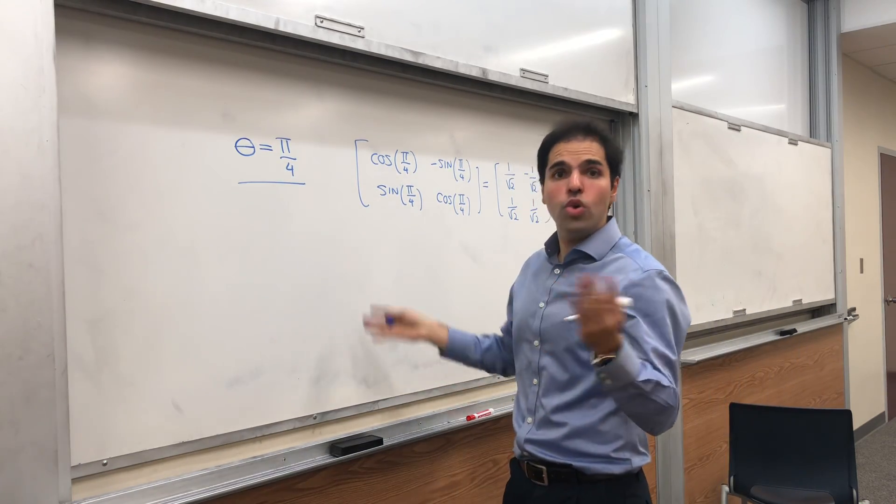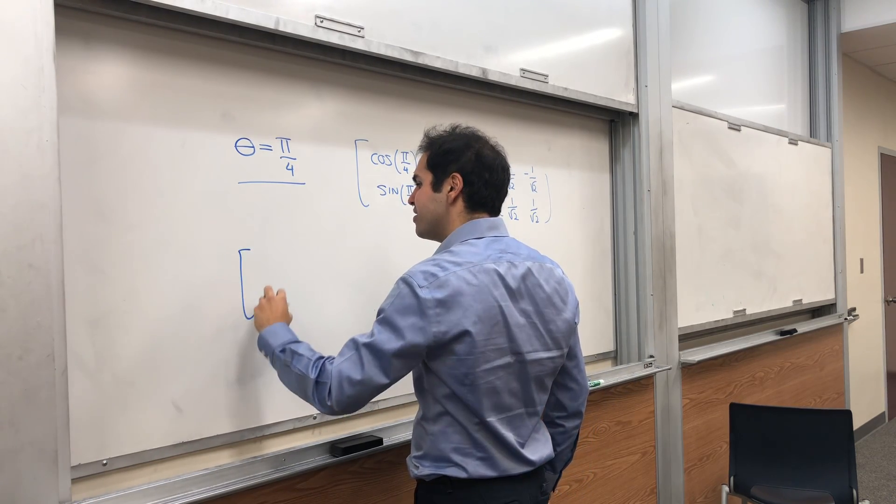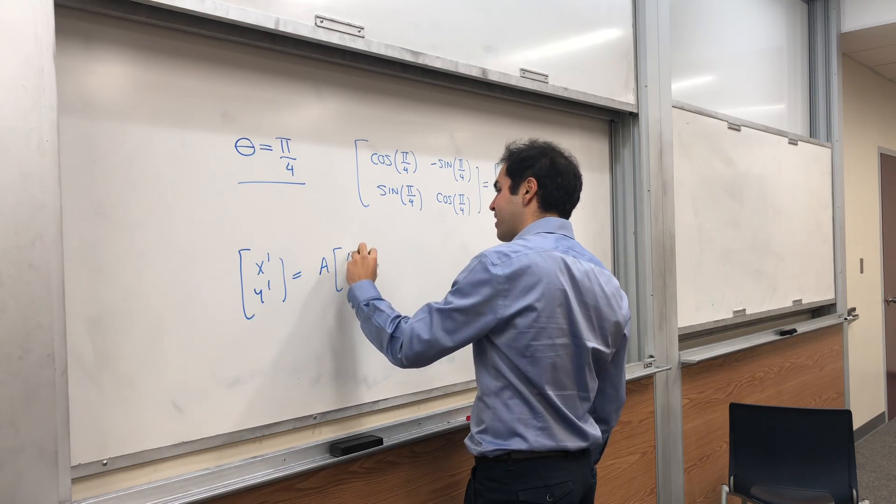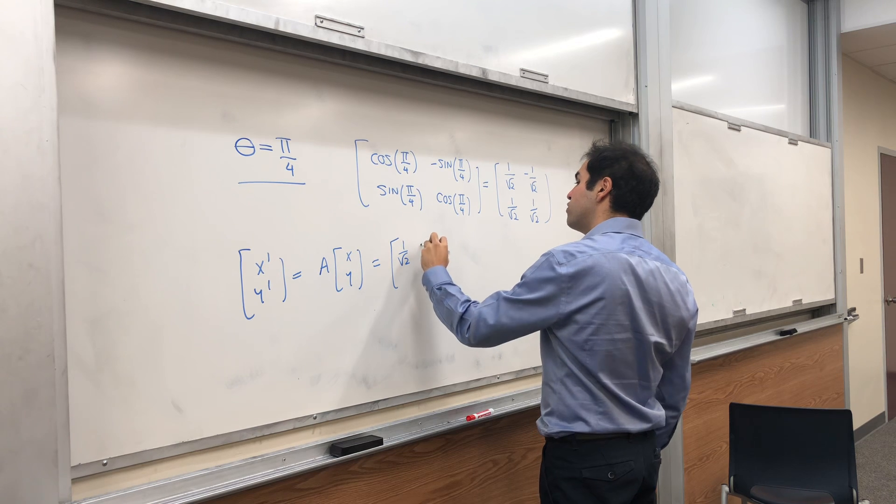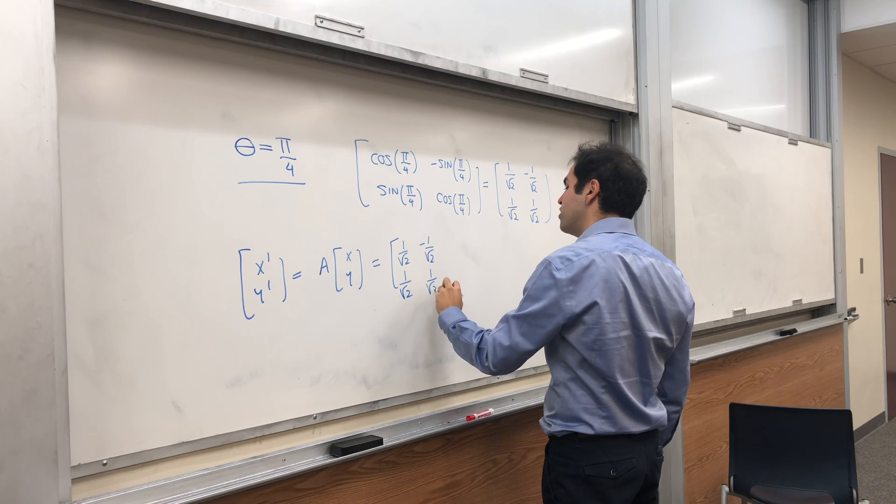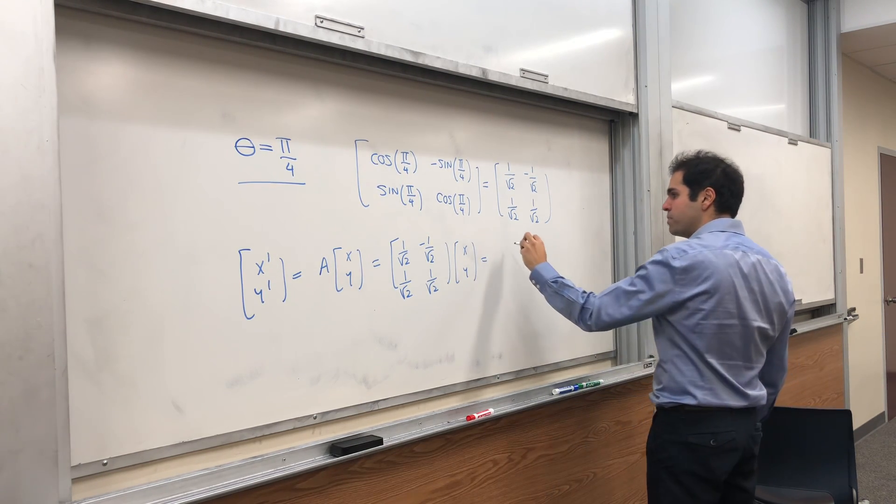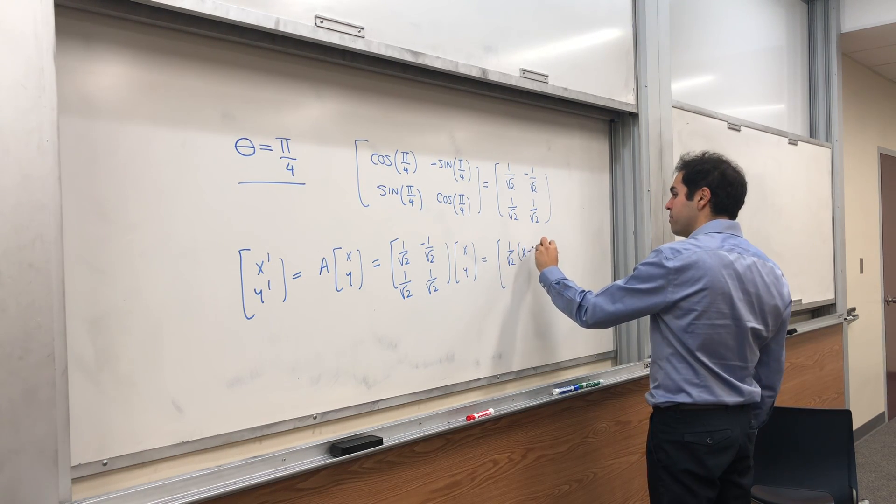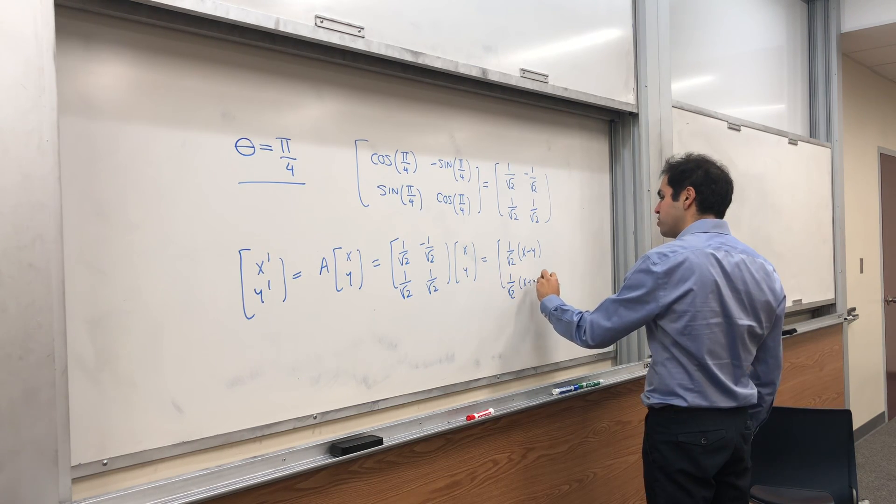So what are the new coordinates that rotate the plane by pi over 4? Well, it's simply x prime y prime equals A times xy, which becomes 1 over square root of 2 minus 1 over square root of 2, 1 over square root of 2, 1 over square root of 2, times xy, which, if you like, just becomes 1 over square root of 2 times (x minus y), and 1 over square root of 2 times (x plus y).